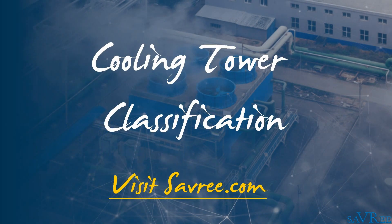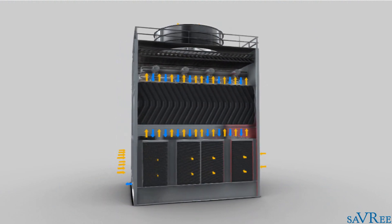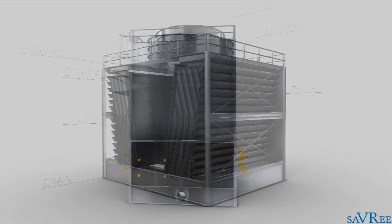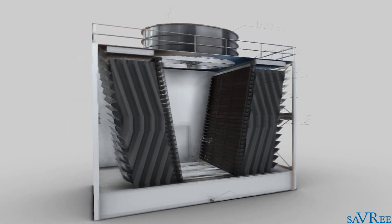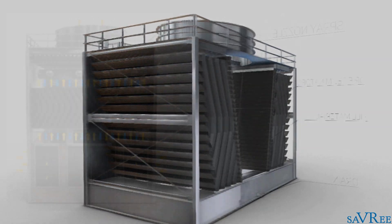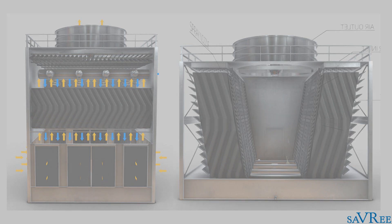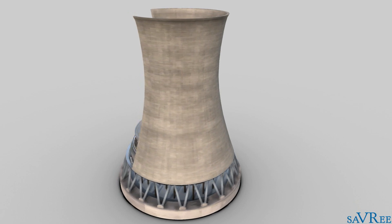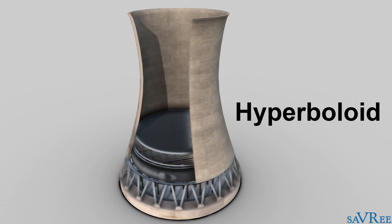It's common to describe cooling towers based upon a mixture of their characteristics. For example, this cooling tower is a wet induced draft counter flow open circuit cooling tower. The cooling tower we're looking at now is very similar, although it is a wet induced draft cross flow cooling tower. The only difference between these two towers is that the one on the left is a counter flow cooling tower, and the one on the right is a cross flow cooling tower. Our final example is a natural draft cooling tower — this particular tower is a wet counter flow open circuit cooling tower, also referred to as a hyperboloid tower.